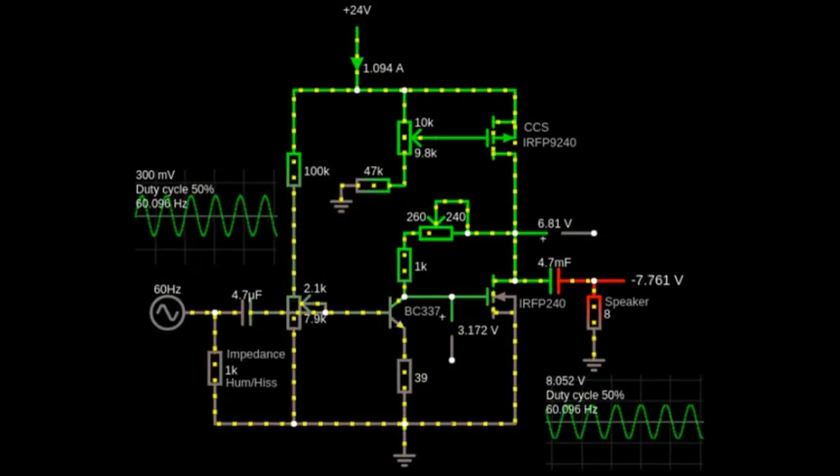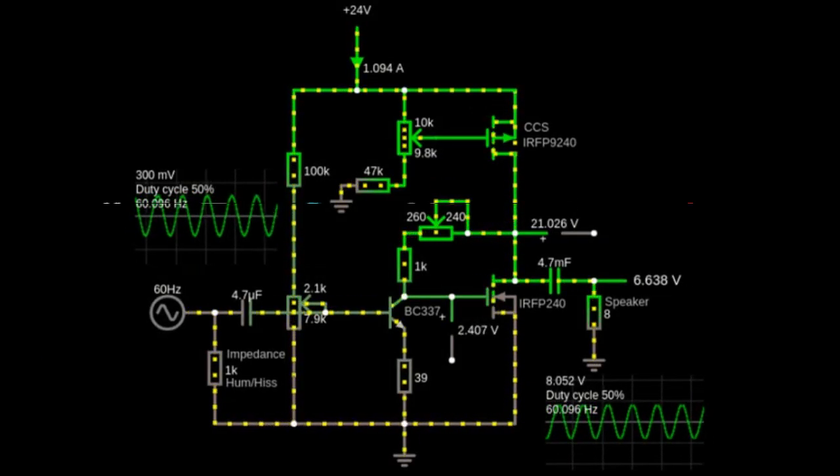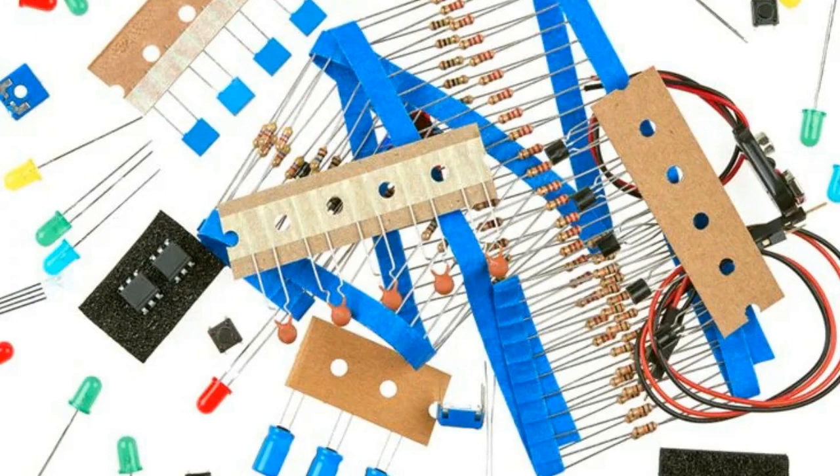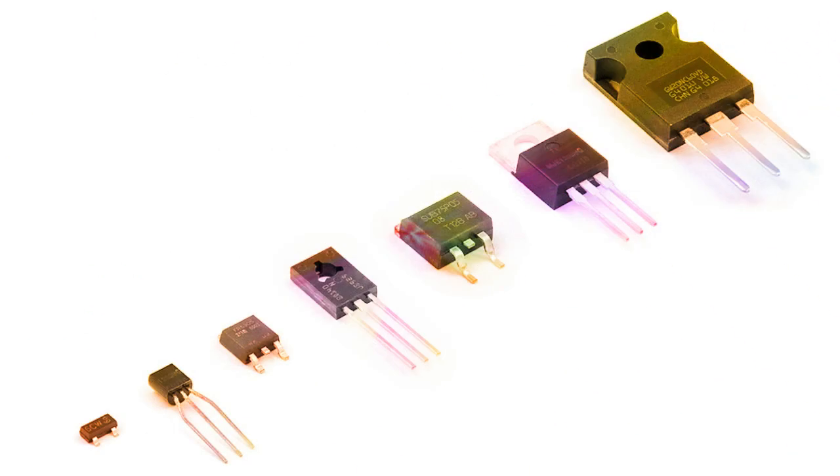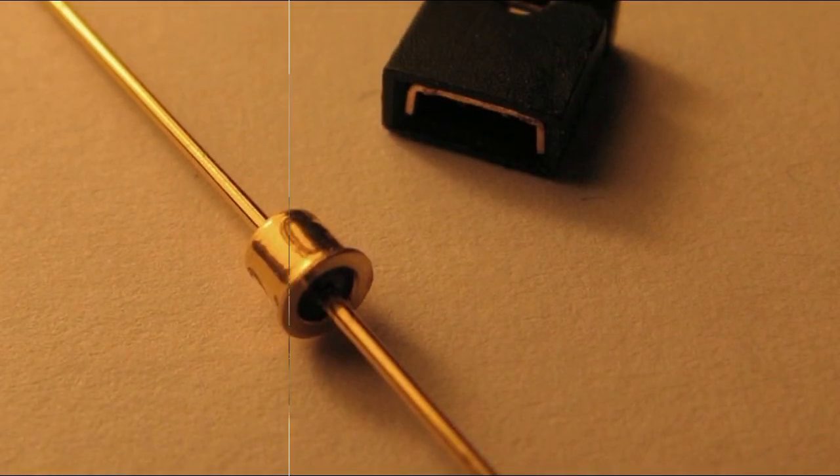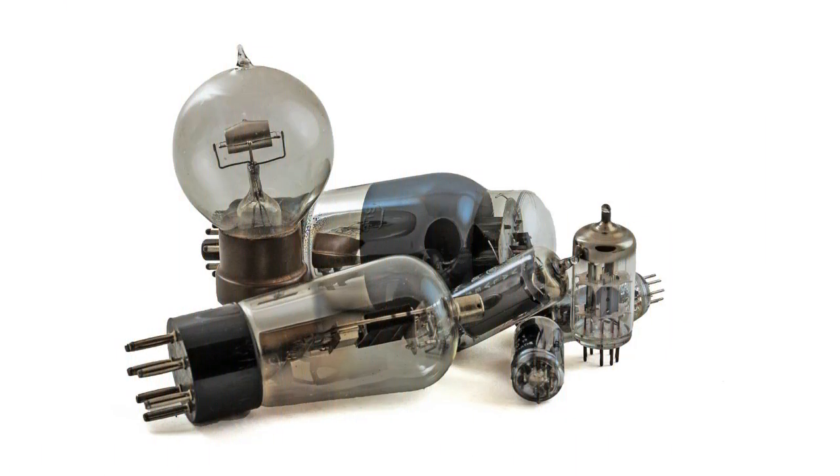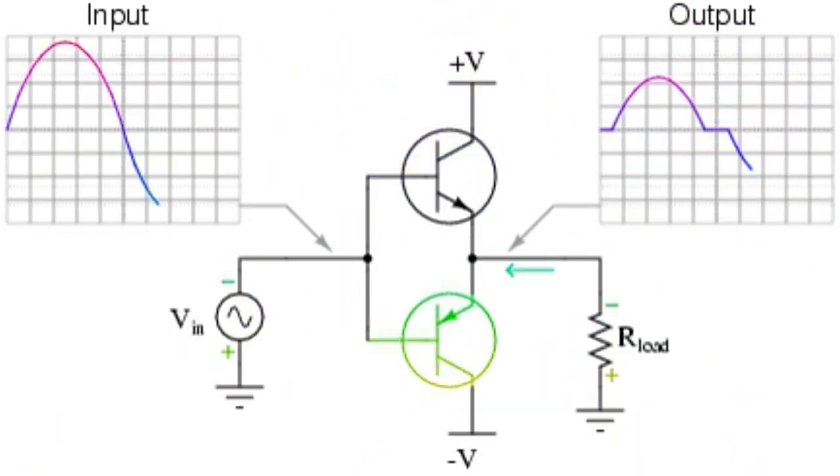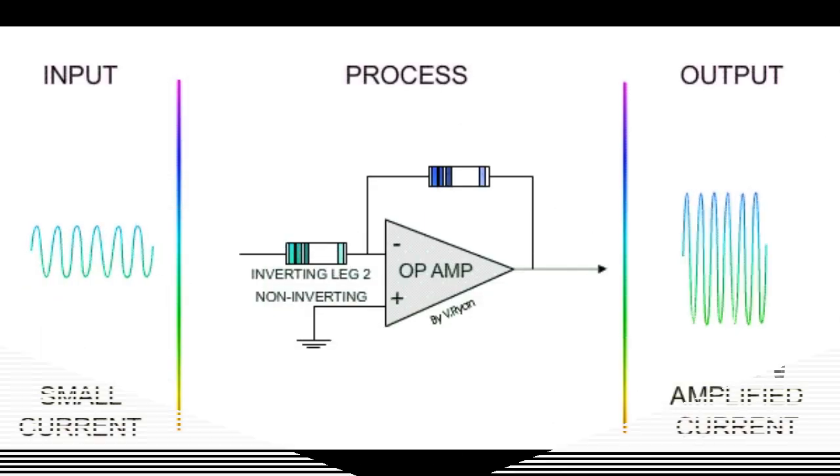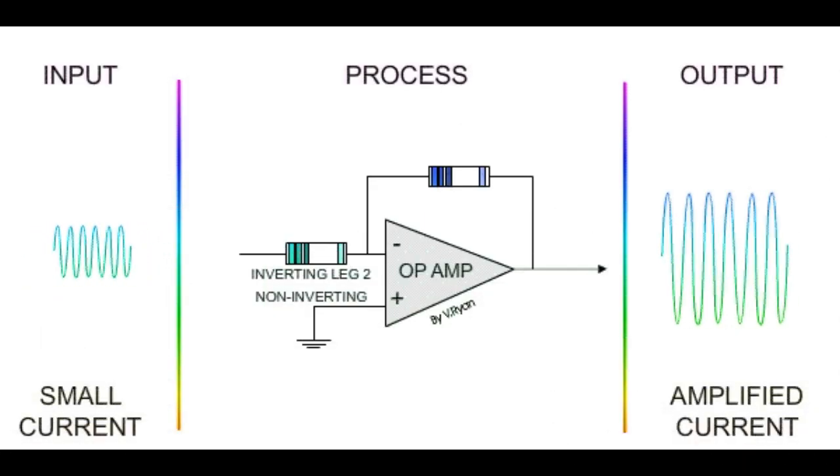In practical terms, active components are useful because they often enable a small amount of electricity to control a larger quantity. One of the major benefits of active devices like transistors and vacuum tubes is that they allow amplification. Whether they influence the flow of electricity by using voltage or current as the control, active components allow small inputs to generate a matching larger output.